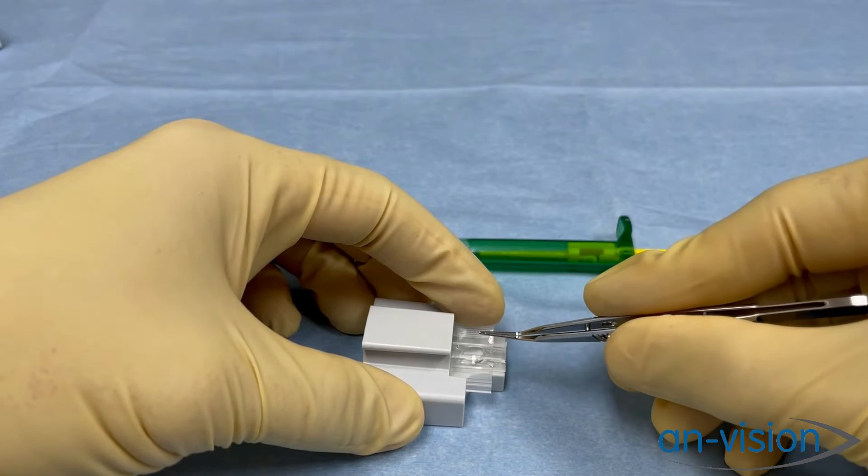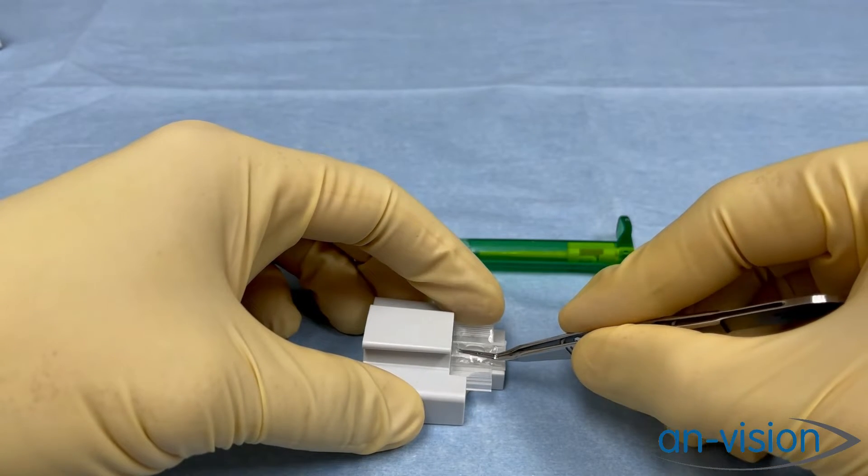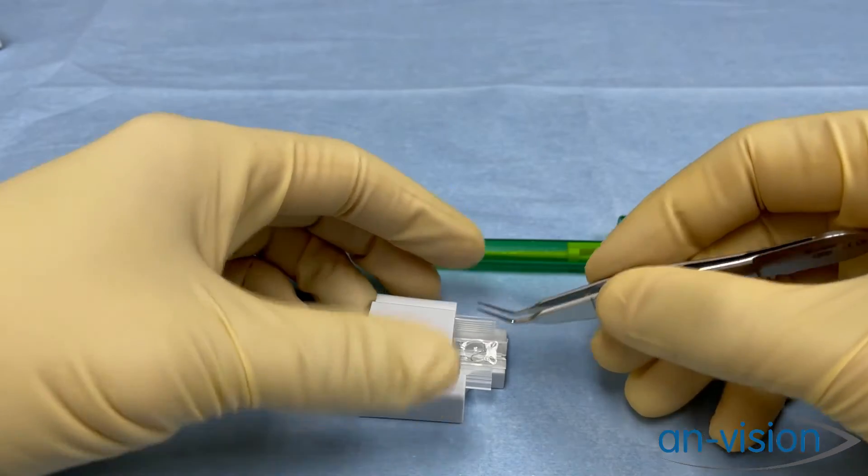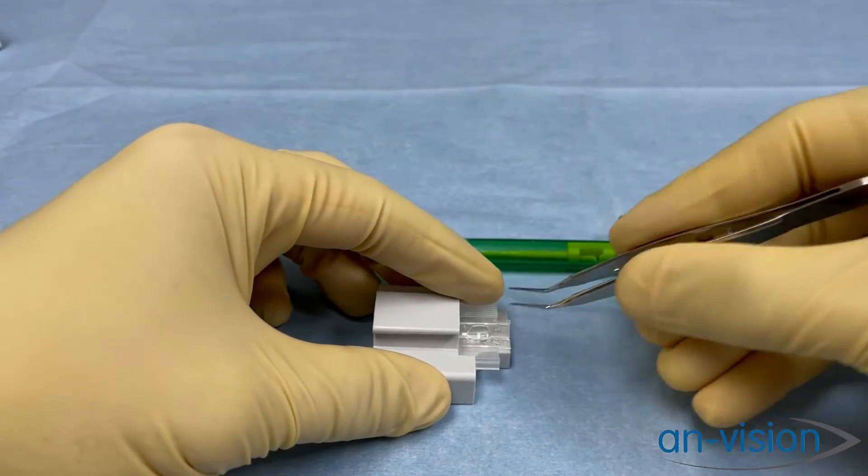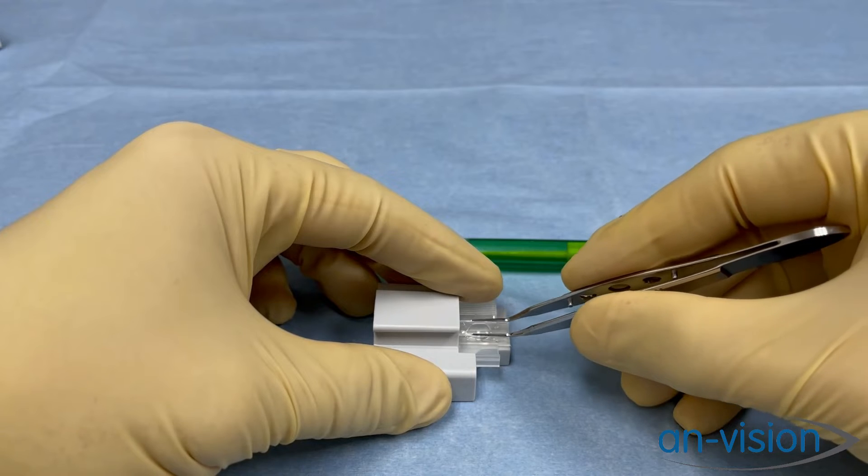We do not want to close our forceps and push in the middle; that will cause the sides of the IOL to fold up and become caught. So, we are actually going to keep our forceps open and only push on the edges as we slowly close.